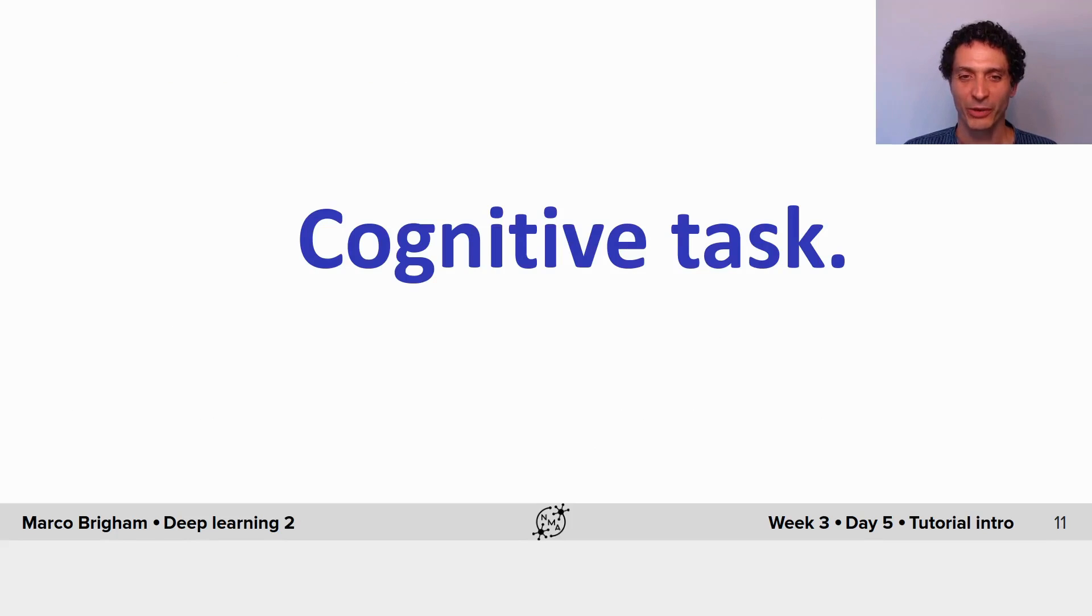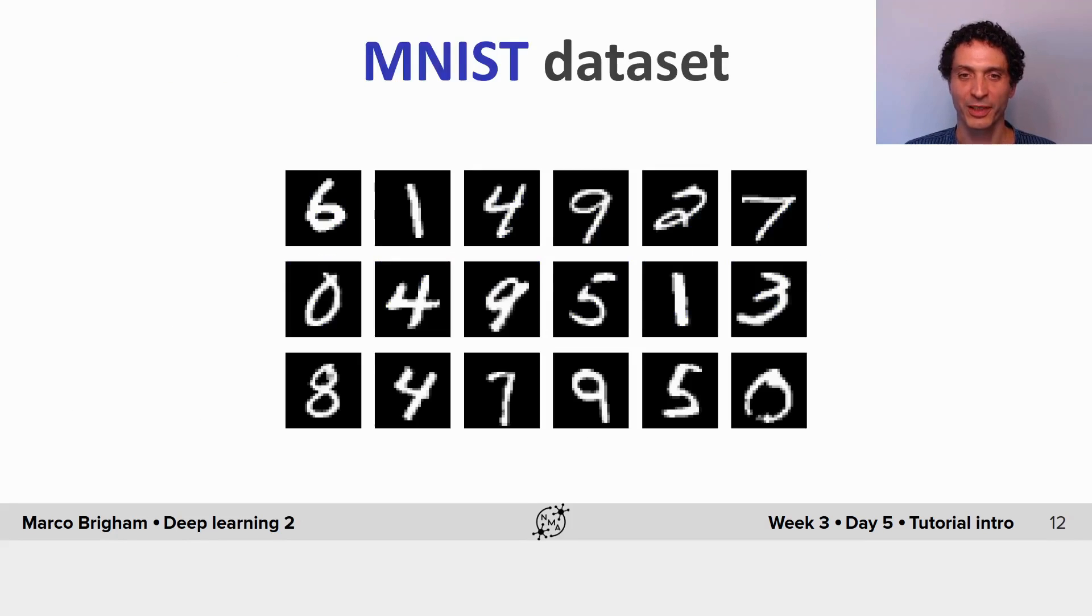Now let me tell you about the cognitive task that we'll be using in this tutorial. So it starts with the MNIST dataset, the database of handwritten digits, and here you have some examples.